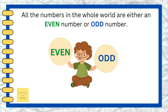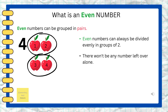Now, today we will learn about even and odd numbers. All the numbers in the whole world are either an even number or an odd number. Look, there are four apples — four is an even number, but why is that? An even number can be grouped in pairs; even numbers can always be divided evenly in groups of two.